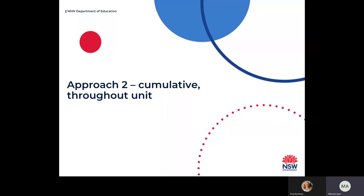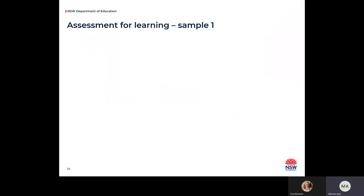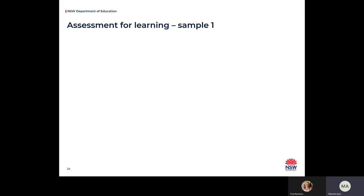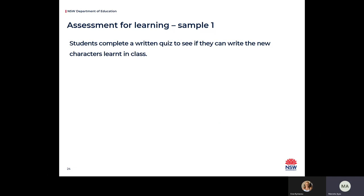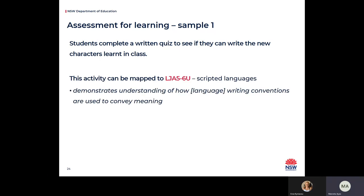Approach two: using assessment for learning activities and tasks to cumulatively assess throughout the term. We're going to look at how a series of assessment for learning activities can form part of your assessment schedule — similar to the generic class party unit where students create a party planner's portfolio over the course of a term. In scripted languages, you can include a written quiz relating to new characters, because there is an outcome relating to the language's written conventions. This is different to a vocabulary test, which doesn't align to any outcomes and so cannot be used for assessment.